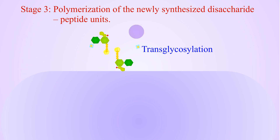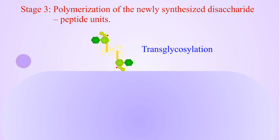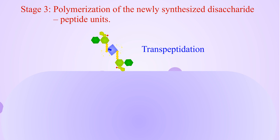Next, transpeptidation will occur by releasing terminal D-alanine from one stem of the peptide to form an enzyme-substrate intermediate, releasing the energy necessary for the transpeptidation reaction. Then the peptidyl moiety is transferred to the non-alpha amino group of the dibasic amino acid in the second stem peptide. The process continues until the cell wall is completed.